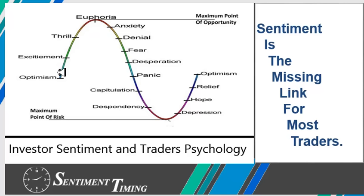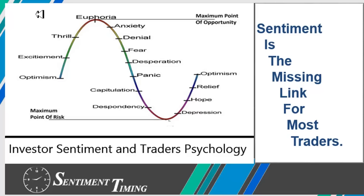This is exactly what the institutions do. They don't try to guess exactly where the top or bottom is — they start buying right into the capitulation end of it and start selling in the thrill up to euphoria, taking the big part of the moves. If you follow what Woody Dorsey does, he's been a pioneer with investor sentiment and has one of the oldest investor sentiment databases in the world. He knows how it works, and this is how you want to be trading these cycles — you'll know where they are based on the sentiment readings.